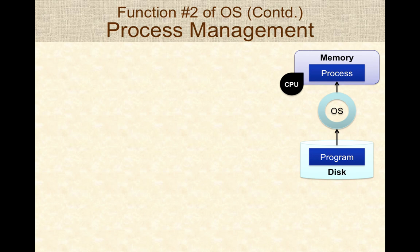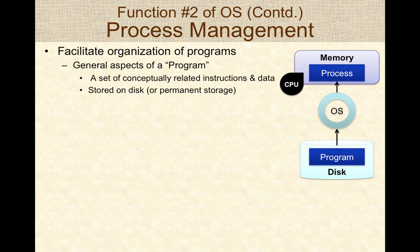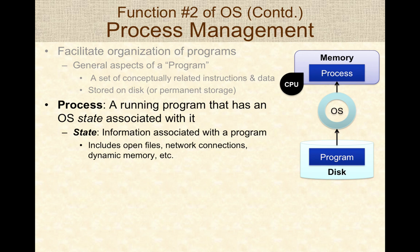Operating systems facilitate the organization and running of programs. A program is a set of related instructions and data stored on disk. When a program is actually run, the operating system loads the program into memory, creating what is called a process. What is actually running on a computer is not a program but a process — this is an important distinction. A process also has state information associated with it, including open files, network connections, and dynamically allocated memory.